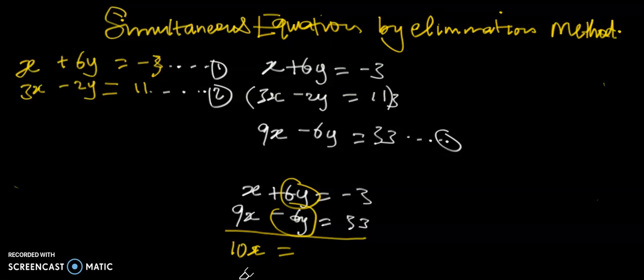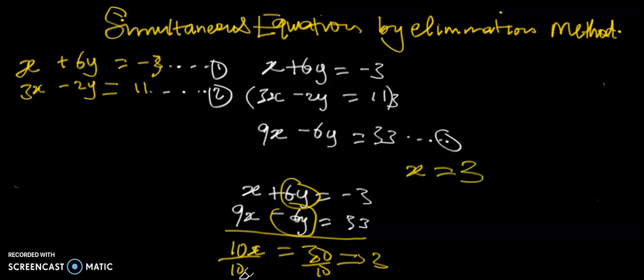So we have 10x equals positive 30. Divide all through by 10: 30 divided by 10 gives you 3. This implies that our value for x is equal to 3. Now let us find the value for y.